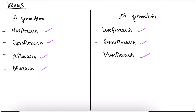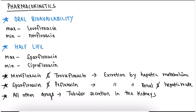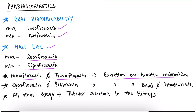Now for the pharmacokinetics of fluoroquinolones: oral bioavailability is maximum in levofloxacin and minimum in norfloxacin. Half-life is maximum in sparfloxacin and minimum in ciprofloxacin — remember this by heart. Regarding excretion, moxifloxacin and trovafloxacin are excreted by hepatic metabolism, while sparfloxacin and pefloxacin are excreted by both renal and hepatic routes. All other drugs are excreted through tubular secretion in the kidney.